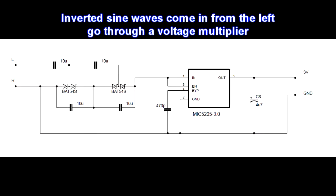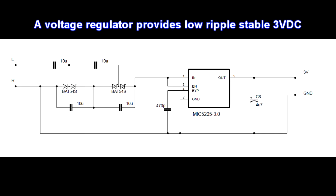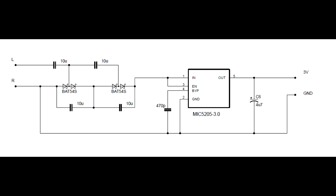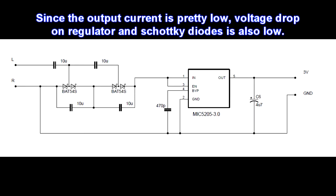On the left, we come in with two sine waves, 180 degrees shifted or inverted, from left and right channel. Ground is not connected and then it goes through a voltage multiplier and then into a voltage regulator. And we have 3V at the output.